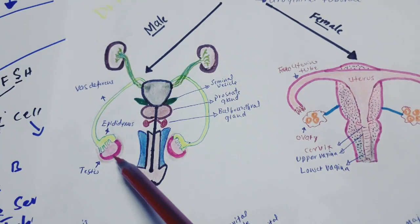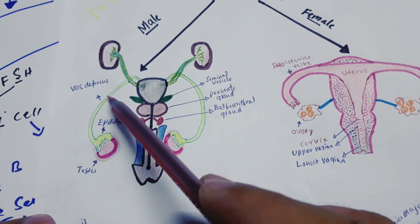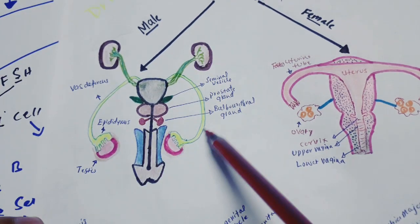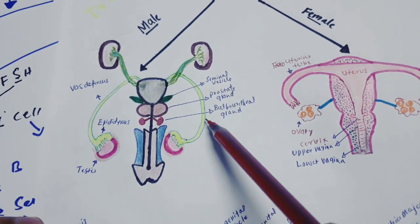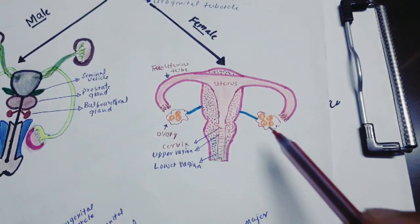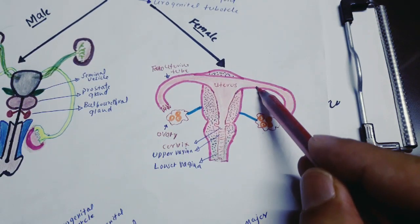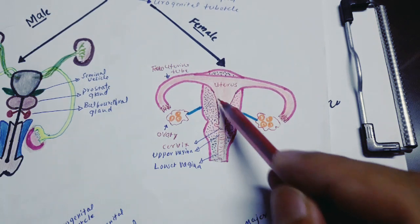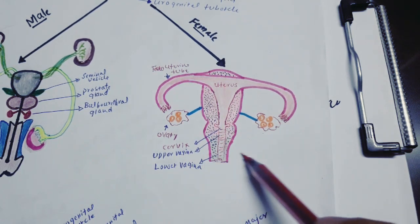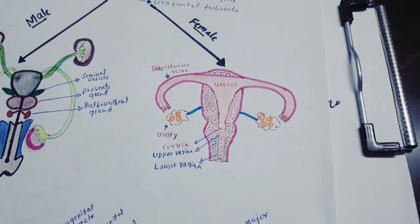To summarize: in males, the structures are testes, epididymis, vas deferens, and seminal vesicle. In females, the structures are ovary, uterine tube (fallopian tube), uterus, cervix, and upper vagina — all of which up to the upper vagina are derived from the Müllerian duct.